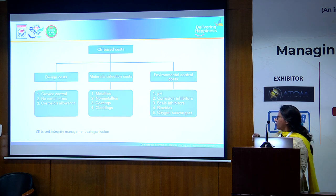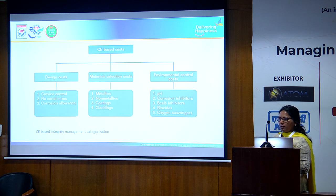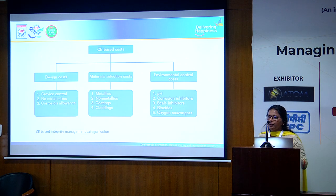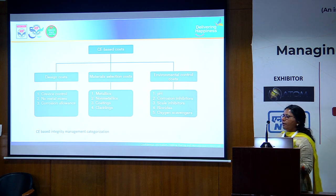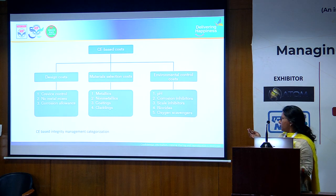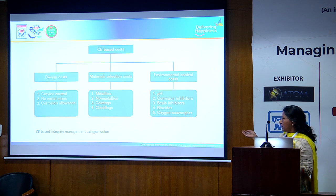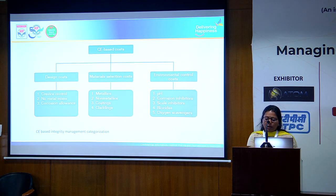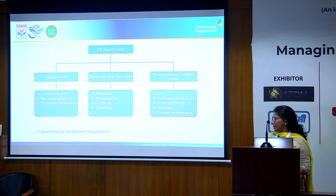We also consider corrosion control costs at the design stage. We should know the operating parameters — what the pH will be, what corrosive elements are in the process fluid — and if needed, consider carbon steel with corrosion allowance plus additional corrosion control measures such as corrosion inhibitors, scale inhibitors, and biocides, particularly for offshore pipelines for crude or petroleum transportation.